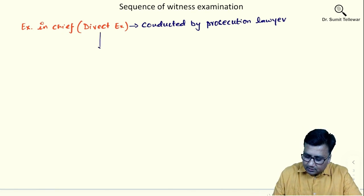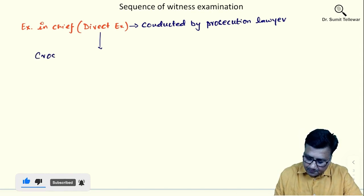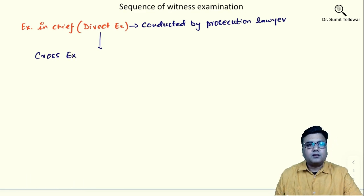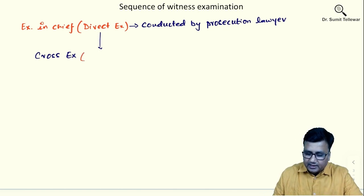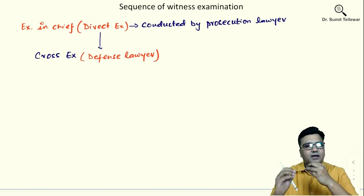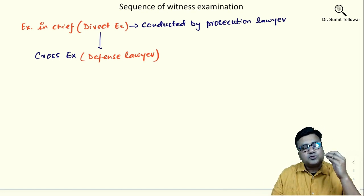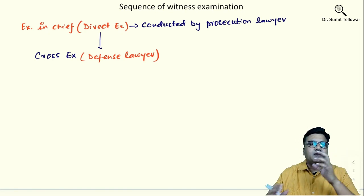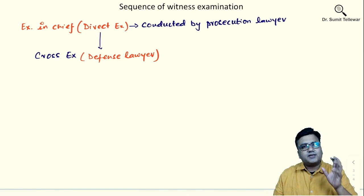After this, what happens? After this happens cross examination. So after examination in chief, the witness has to go through what is called as cross examination. And this cross examination is conducted by defense lawyer in cases of prosecution witness. So prosecution witness comes to court of law. His prosecution lawyer conducts examination in chief, and after that, depending upon what he said in examination in chief, defense lawyer will question him which is called as cross examination.